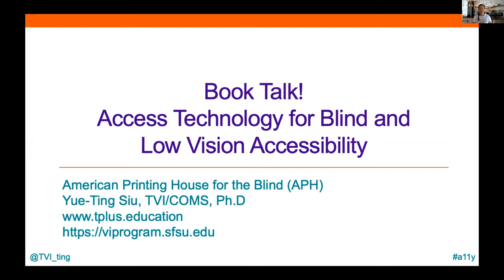The number one thing about this book that I was really excited about is the title: Access Technology for Blind and Low Vision Accessibility. It probably took us months to really land on a title that was agreeable. This title was developed with a lot of feedback from the blindness community and from my blind techie friends. With this book, we're trying to promote a pretty big shift in philosophy of how sighted service providers need to be better allies to the blindness communities and really empower students for true participation in their local communities.